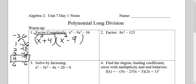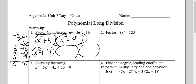My instructions say to factor completely, so one of these I might be able to factor further. It looks like I have a difference of squares, so I can factor that one more time. I cannot factor x squared plus 4, so I'll just rewrite that. x squared minus 9 becomes x minus 3 times x plus 3.